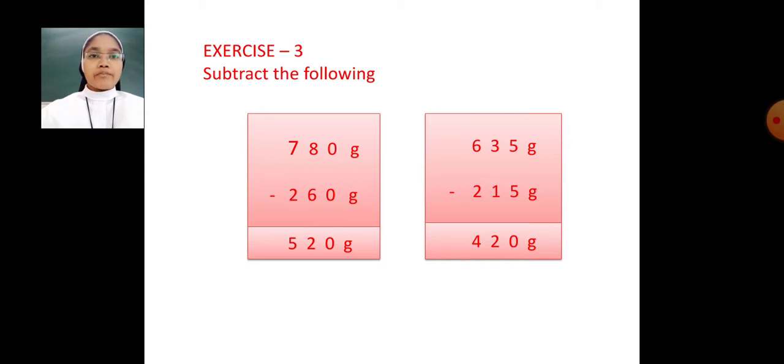780 gram minus 260 gram. We have to start doing subtraction from the ones place. 0 minus 0 is 0, 8 minus 6 is 2, 7 minus 2 is 5. 780 gram minus 260 gram, your answer will be 520 gram.